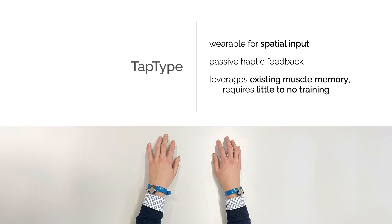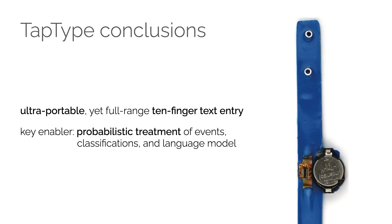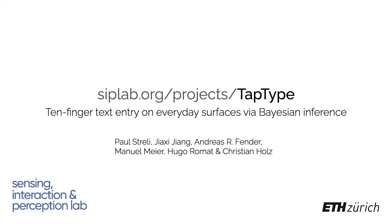In conclusion, I presented TapType, our wearable text entry method which enables full 10-finger typing by appropriating passive surfaces. Because TapType users type as they would on regular keyboards, they can transfer their existing muscle memory and type without much training. TapType is ultra-portable, but users can still leverage their full dexterity while entering large amounts of text. It is the probabilistic treatment of tap events and language modeling that is the key enabler of our method to enable typing anywhere.